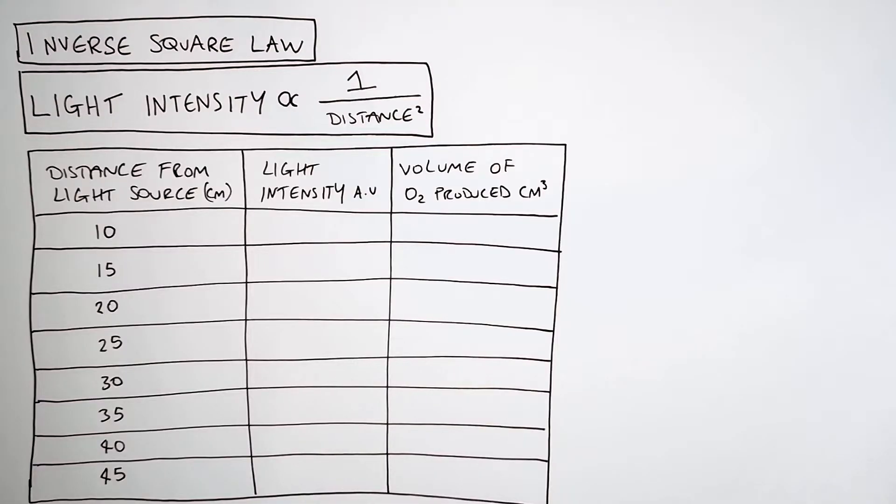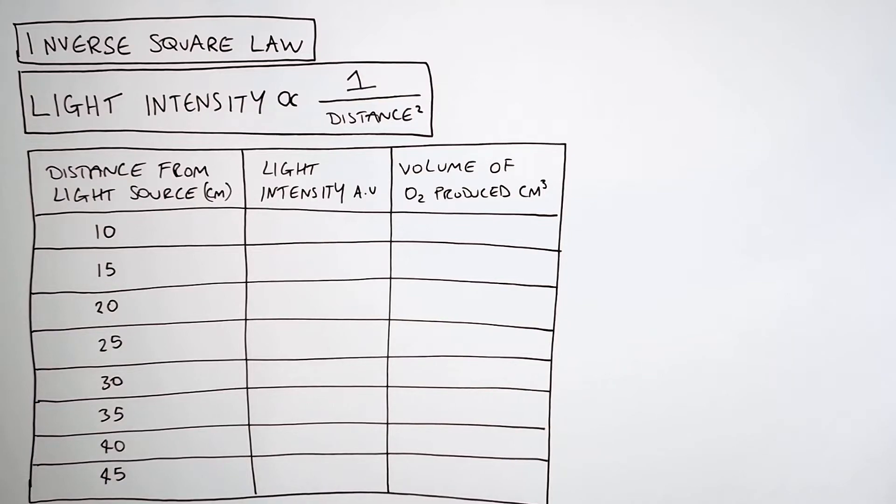So we're not going to use the data from the previous experiment. What we've done here is use new data. So we've got the distance from the light source going from 10 centimeters up to 45 centimeters away from the light source. And what we've now put in is the volume of oxygen produced at each of the different distances away from the light source. You can already see a trend whereby the closer the pondweed is to the light source, the more oxygen has been produced.